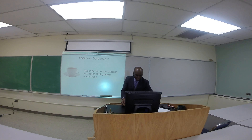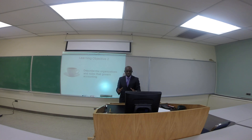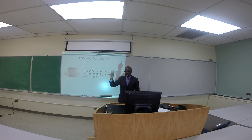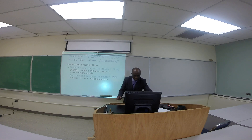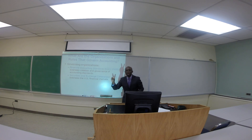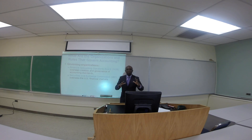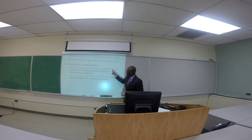Let's take a look at learning objective two: describe the organizations and rules that govern accounting. So we have two issues here — organizations that have a big impact on the accounting profession, and the rules that govern accounting. Here are two extremely important organizations. There are many organizations that have influence on accounting, but the two primary ones are FASB — Financial Accounting Standards Board — and the SEC — Securities and Exchange Commission.